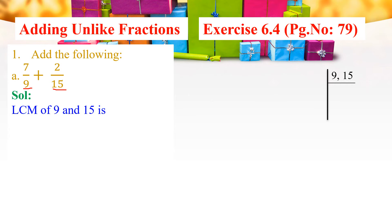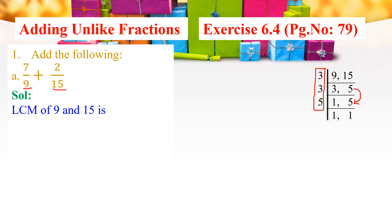We need to find the LCM. Write the denominators as 9 and 15. Both numbers are divisible by 3, giving 3 and 5. Divide again by 3, giving 1 and 5. Since 5 is not divisible by 3, carry 5 as is. Divide by 5, giving 1 and 1. The LCM is 3 times 3 times 5. So 3 threes are 9, and 9 times 5 is 45. Therefore, LCM equals 45.